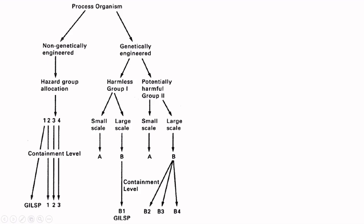For genetically engineered Group 1 (harmless) organisms at small scale, no containment regulation is needed. Even though genetically engineered, if it is harmless and at small scale, it is acceptable. For large-scale production with Group 1, we follow Containment Level B and practice B1 Good Industrial Large-Scale Practices. For Group 2 (potentially harmful) organisms, there are no specific industrial standards for small scale; for large scale, Containment Level B applies, subdivided into B2, B3, and B4, where B2 is least harmful and B4 is the most harmful.